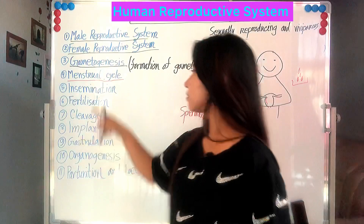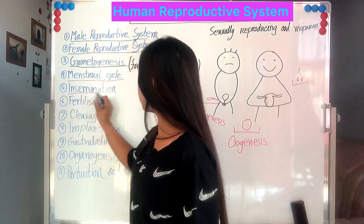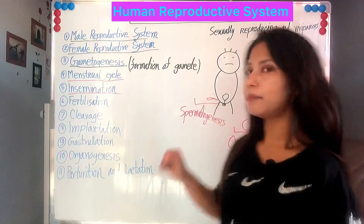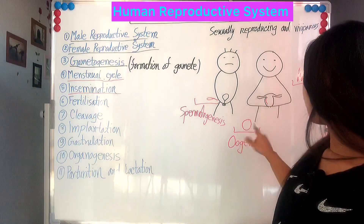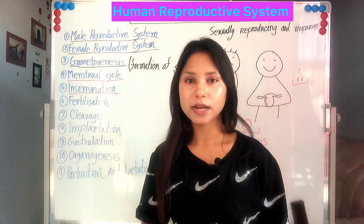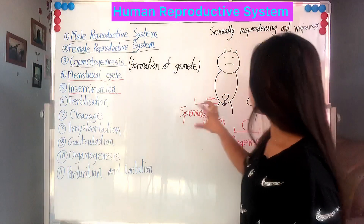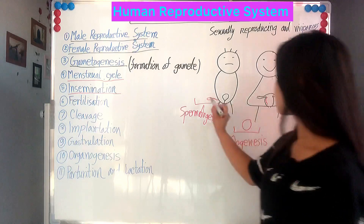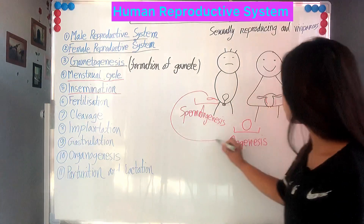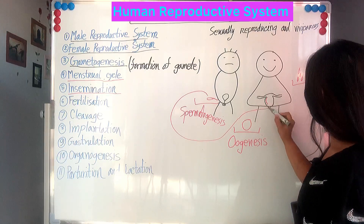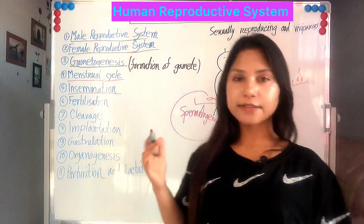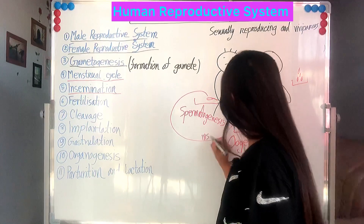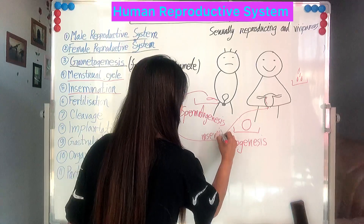The next term is insemination. The male produces sperm and the female produces ovum. The male will deposit sperm into the female uterine tract. This process is called insemination.